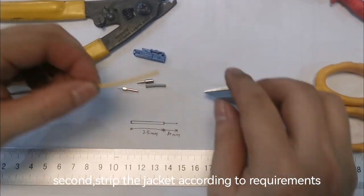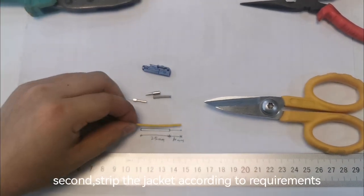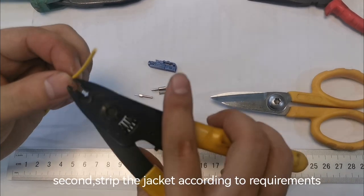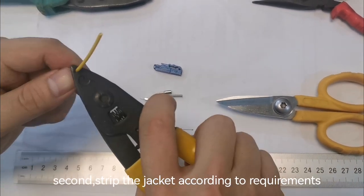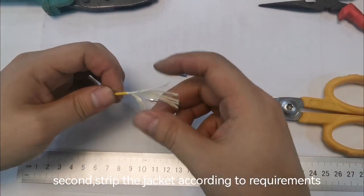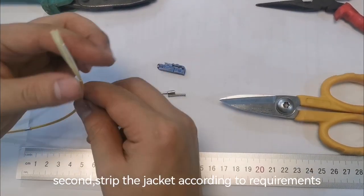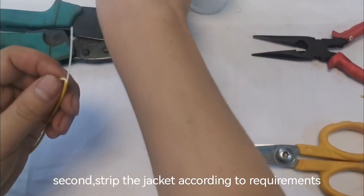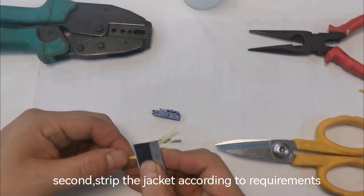Then start stripping. Strip the jacket to 35mm. Cut the jacket to 5mm.